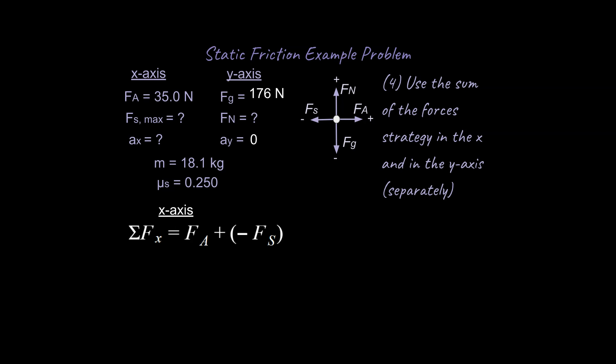So the first line in the sum of the forces is literally the sum of the forces, like you add up the forces in that axis and see what happens. Our fa is positive because it's to the right, our fs is negative because it's going to be to the left, and the second line for the sum of the forces strategy is just Newton's second law. The sum of the forces are equal to mass times acceleration in that axis. So then we set those equal to each other and we see what happens.